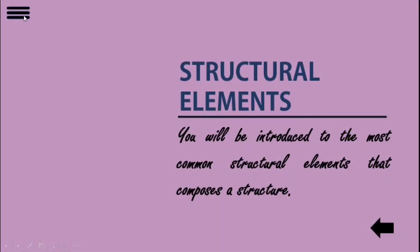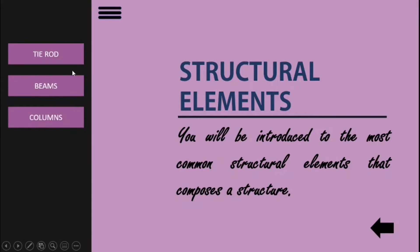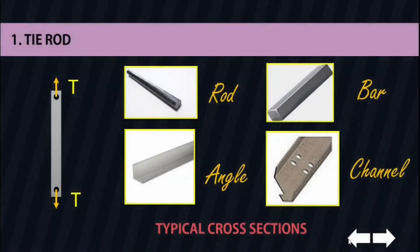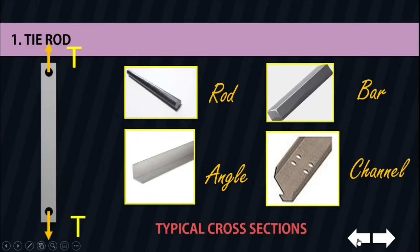In this topic you will be introduced to the most common structural elements that compose a structure. There are three categories: tie rods, beams, and columns. Let's start with our tie rods. Structural members that are exposed to tension or tensile force are often classified as tie rods or bracing struts. Due to the nature of this load, these structural members are rather slender and are often shaped into rods, bars, angles, and channels.